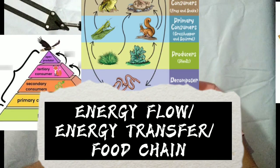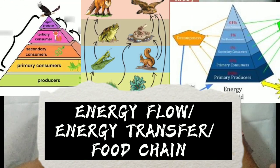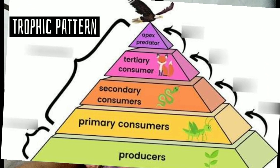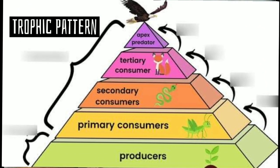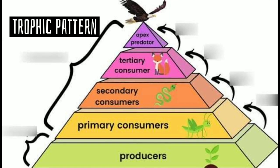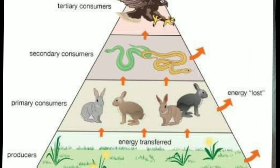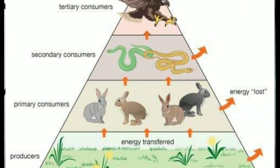Energy flow, energy transfer, or food chain. The transfer of energy from the autotrophs to the heterotrophs makes a trophic pattern. Energy is transferred from one level to another, starting with the producer to the first-level carnivore up to the last consumer. The position of an organism in the sequence is called a trophic level. The first trophic level is the population of green plants, which produce food and are called primary producers. All other populations in a community which are dependent on plants are called consumers.